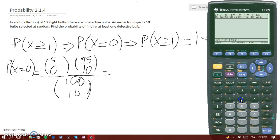Times 95 choose 10, so 95 comma 10, then close parentheses. Then close the second parentheses, divide by, paste again, and then take 100 comma 10 and close parentheses.